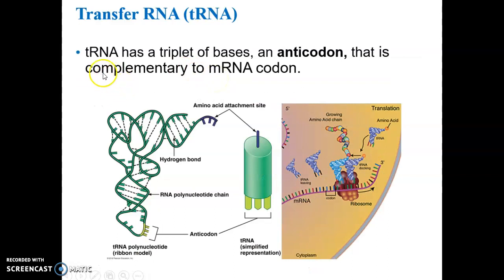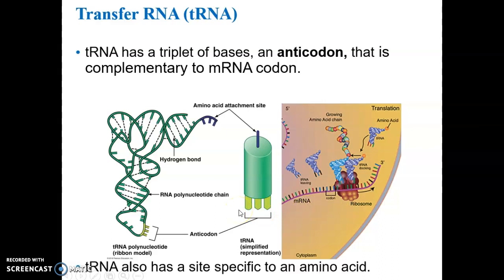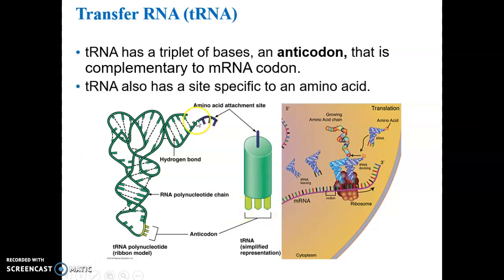The tRNA molecule has a triplet of bases on one end called the anticodon that matches the codons on mRNA. The tRNA molecule also has a binding site for its specific amino acid. Remember, there are 20 different amino acids.